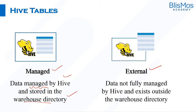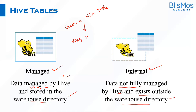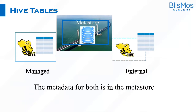In a managed table, data is managed by Hive and also stored in the warehouse directory. On the other hand, in external tables, data is not fully managed by Hive and exists outside the warehouse directory. As we discussed in the previous lecture, whenever we create a table, the data defaults to the user/hive/warehouse directory. When you create a managed table, by default the data gets stored in this directory, whereas when you create an external table, data doesn't default to this directory.